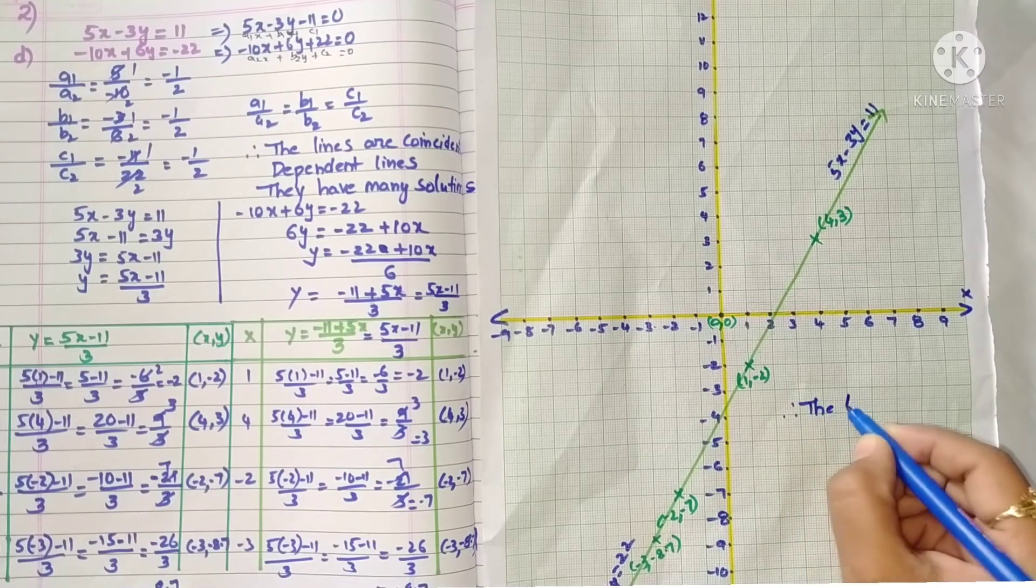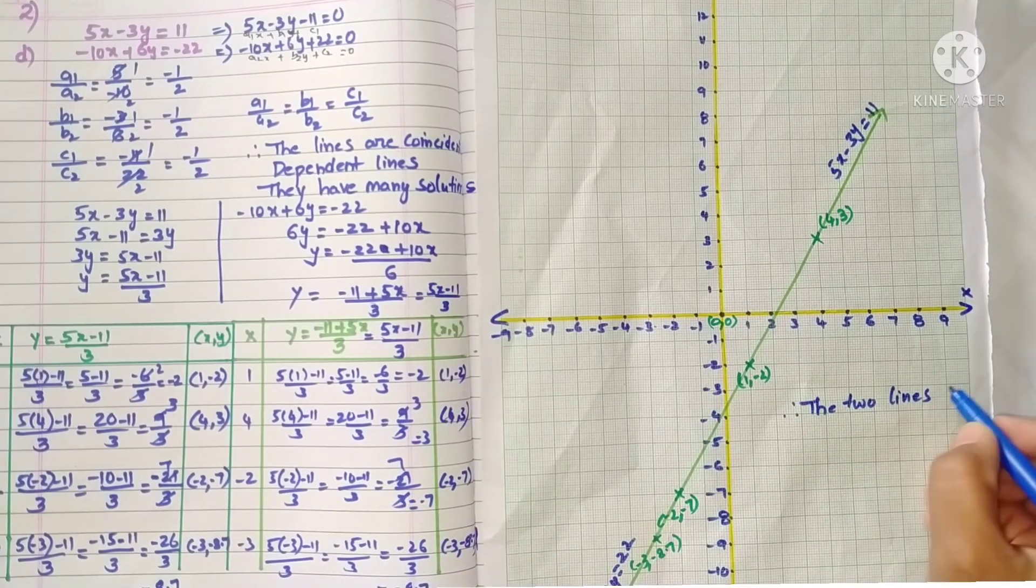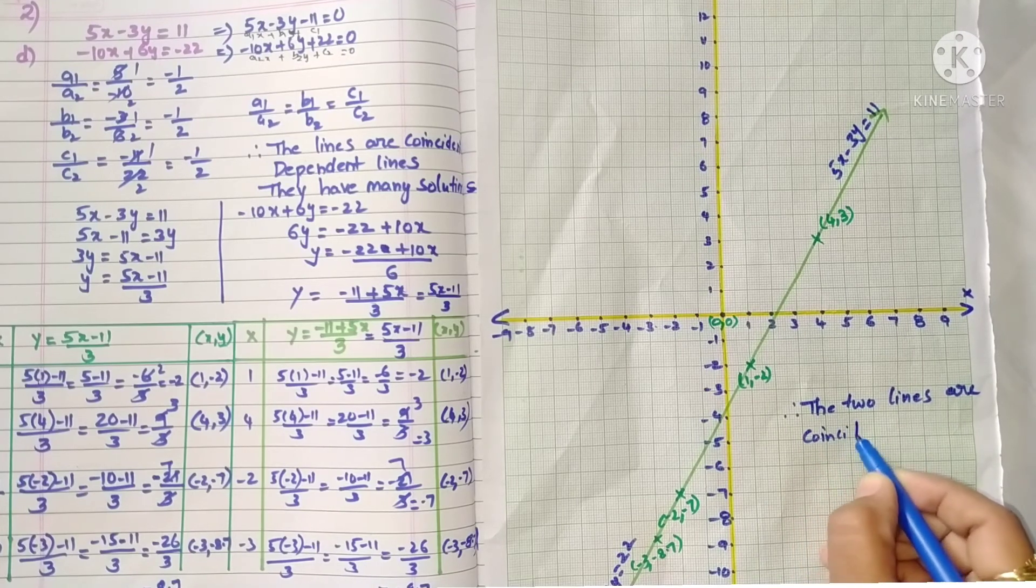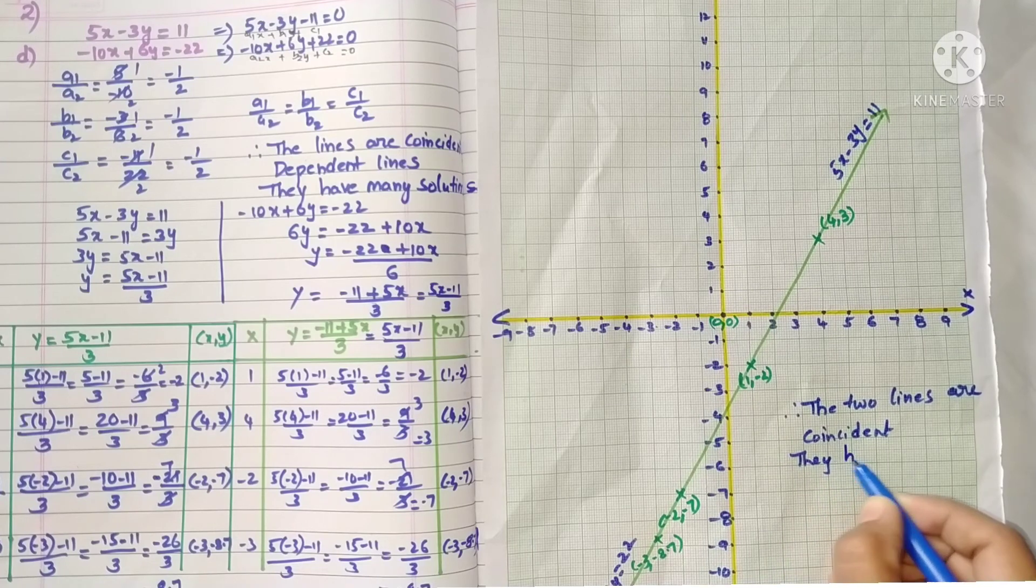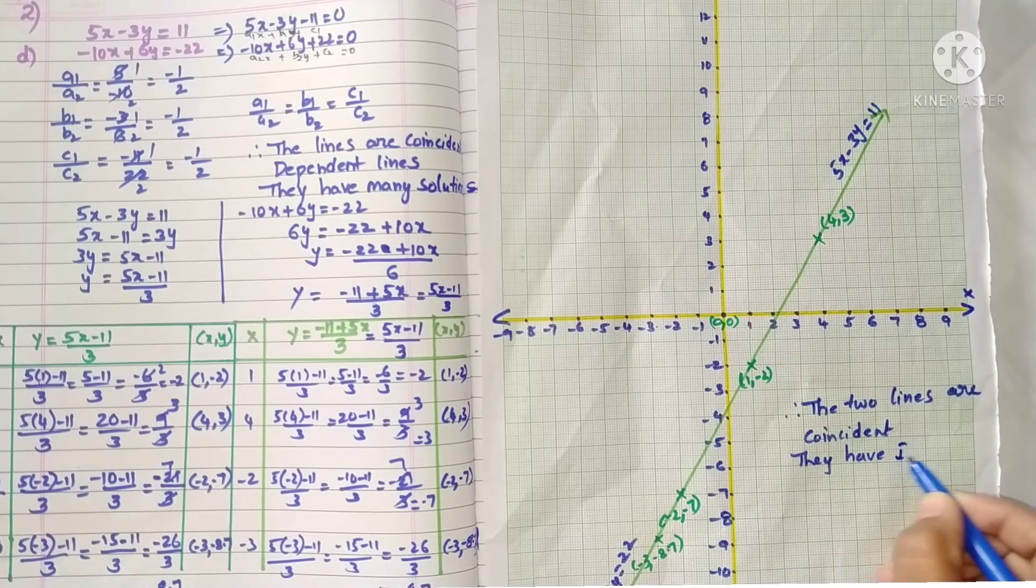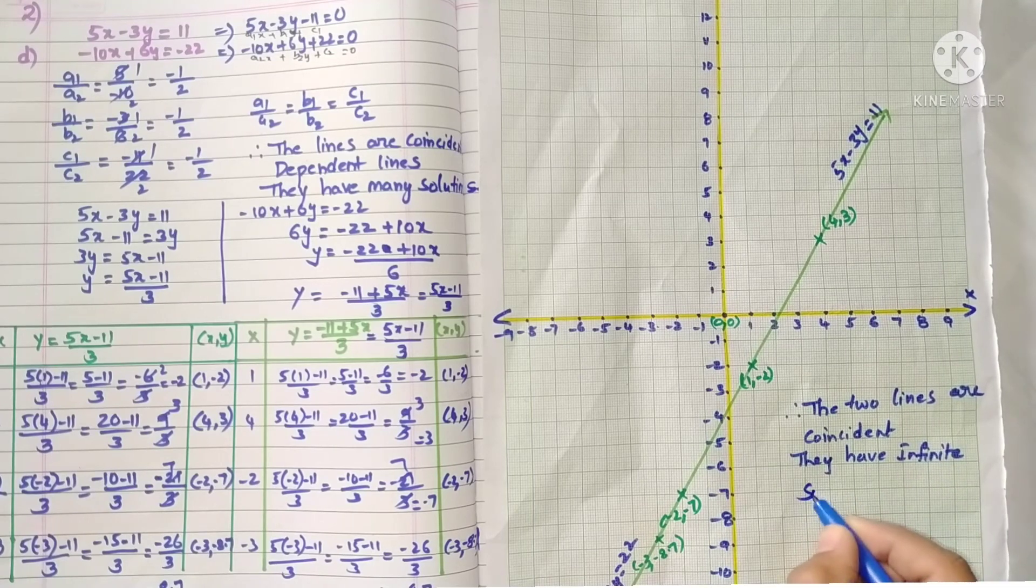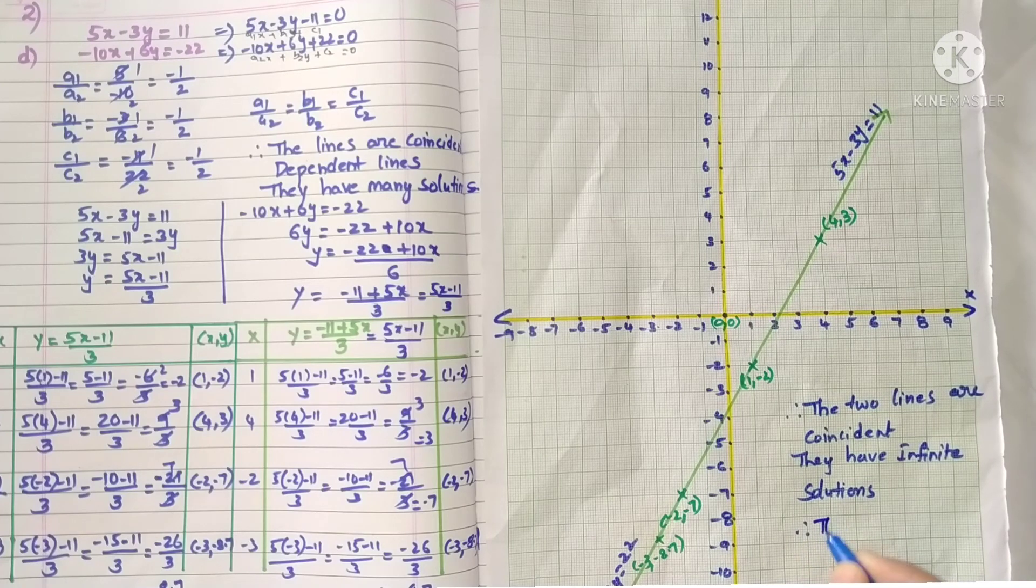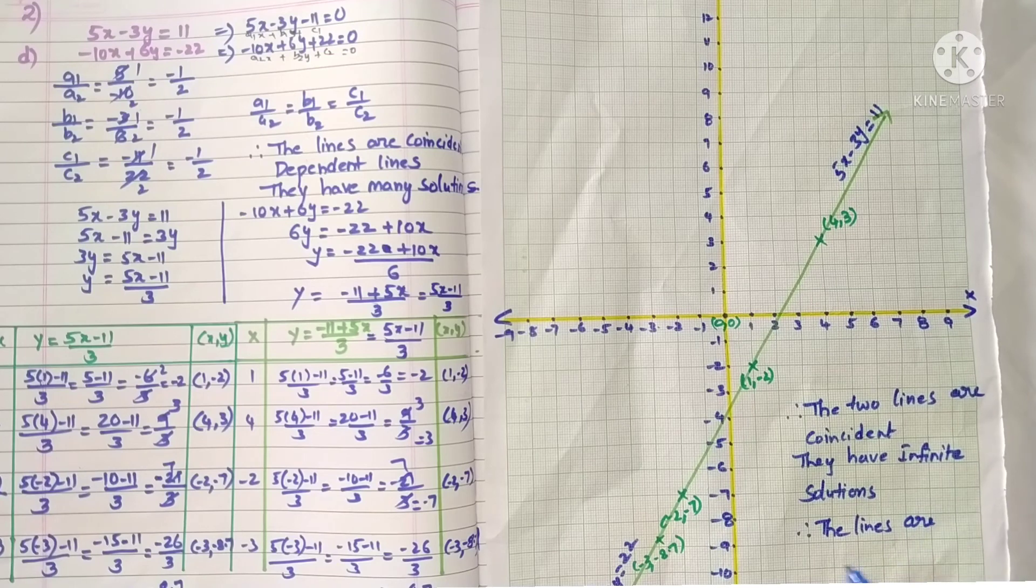Therefore, the two lines are coincident lines. Same points. So the two lines are coincident. They have many solutions or infinite solutions, so they are consistent. Therefore, the lines are consistent.